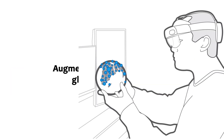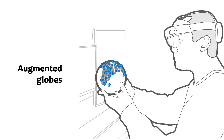The first category is augmented globes. In the augmented globes category, the tangible globe serves as the main information space, which is then augmented by virtual objects. In this category, the virtual data visualizations are positioned above the globe, in the space immediately around it, side by side to the globe, or overlaying the globe.